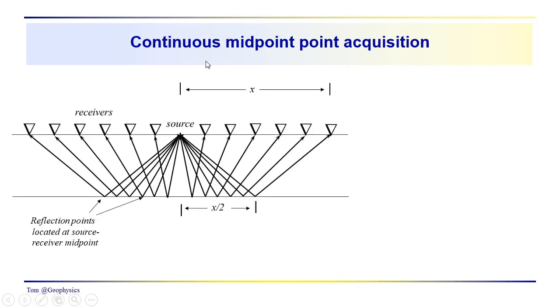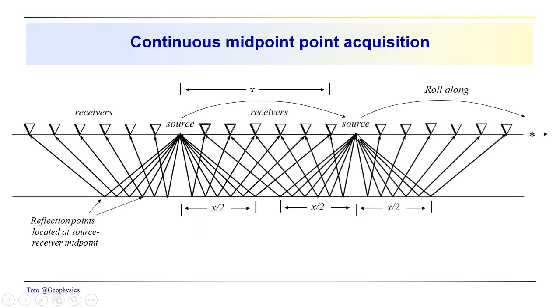And so when we're doing continuous midpoint profiling, we might set up our split spread like this. We've got our source with the receivers to either side of the source. We've got these reflection points in the subsurface. We take the source, plop it over here, just move it over to the end of the receiver array. Take this set of receivers and move them over here and continue on. So moving on to the next source, we often refer to this as a roll-along split spread type acquisition approach.